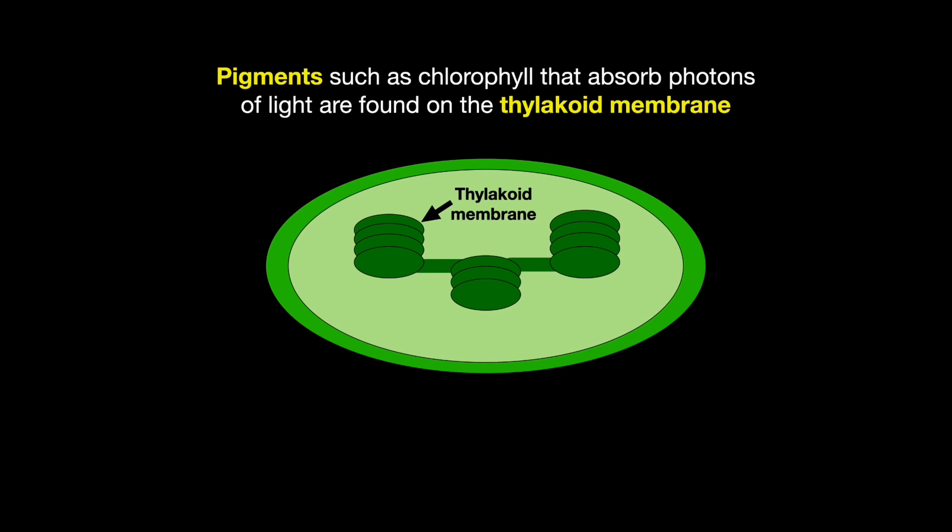In the light-dependent reactions of photosynthesis, pigments such as chlorophyll that absorb photons of light are found on the thylakoid membrane. These pigments are arranged in regions on the membrane called photosystems.